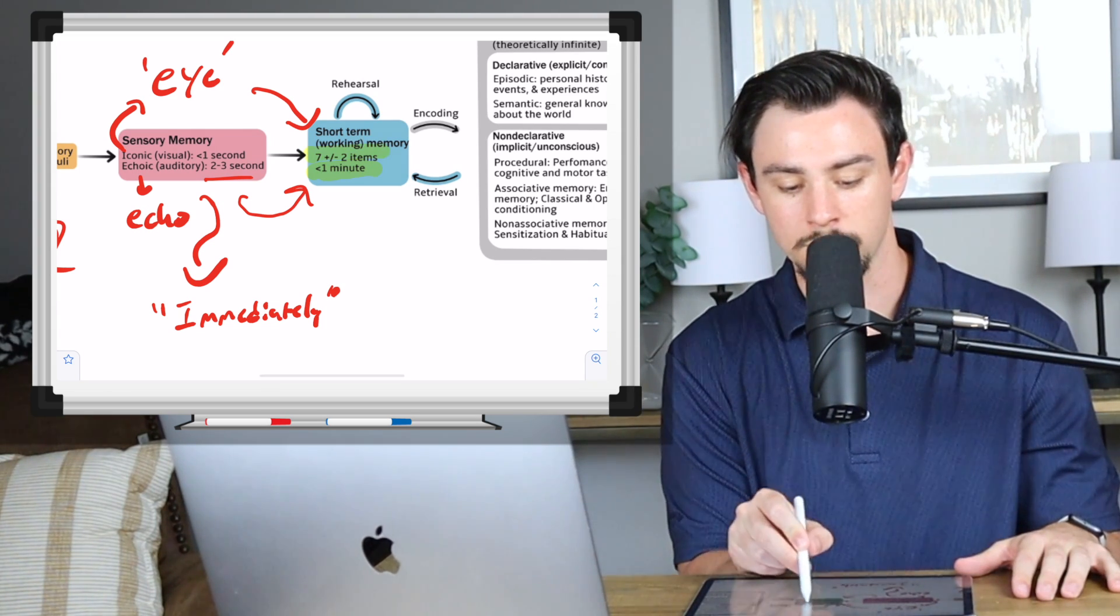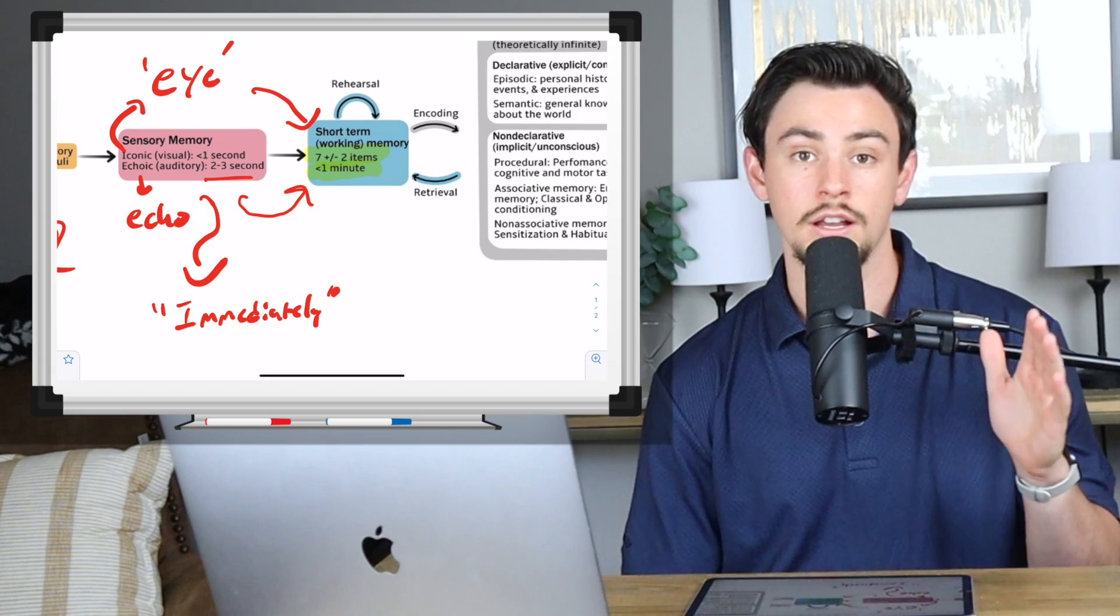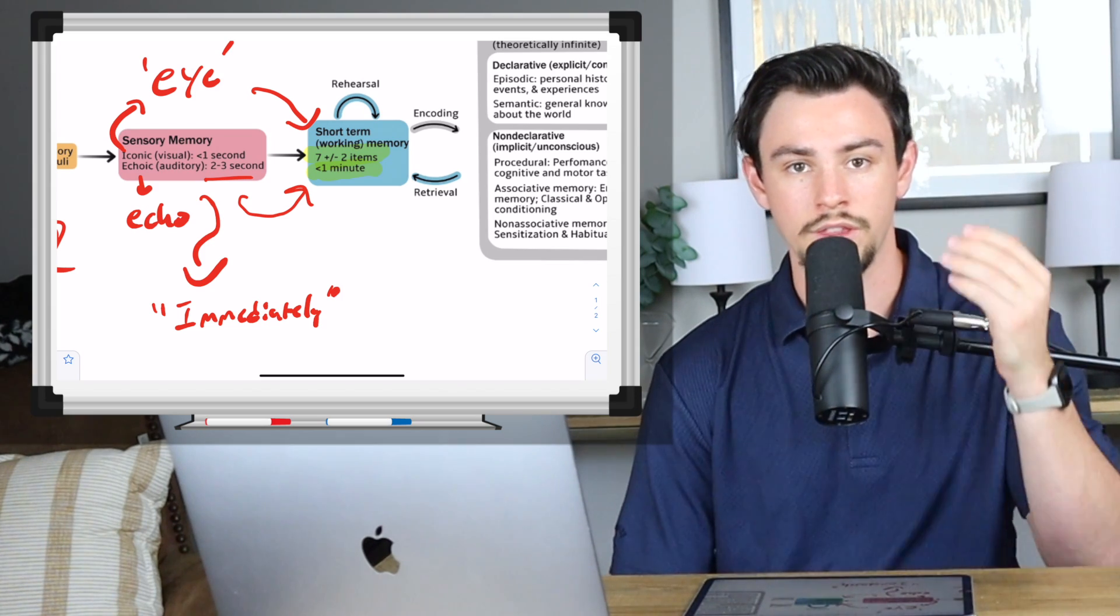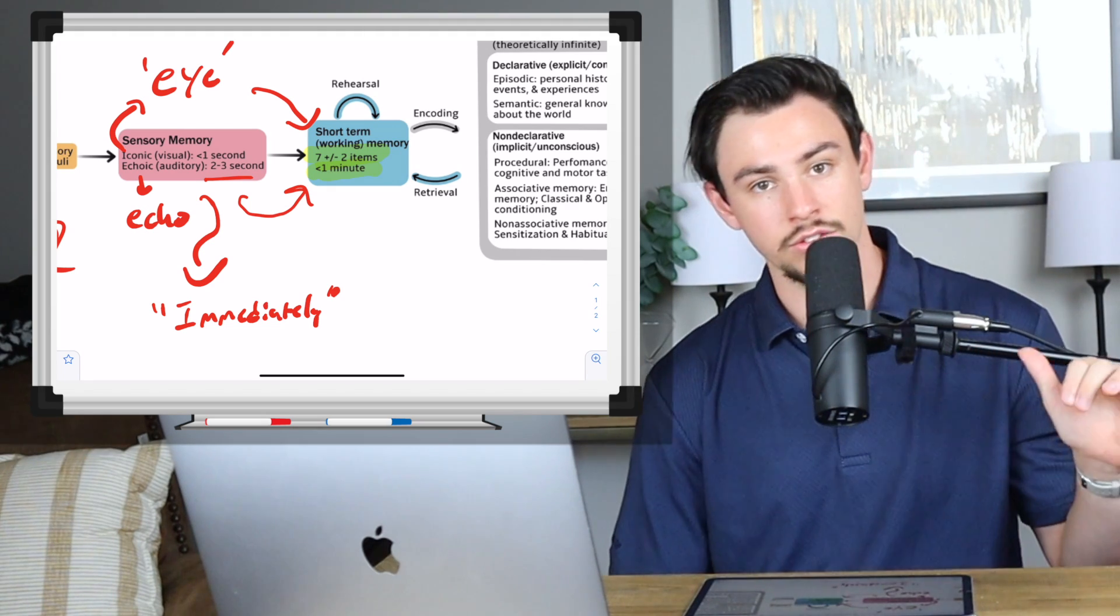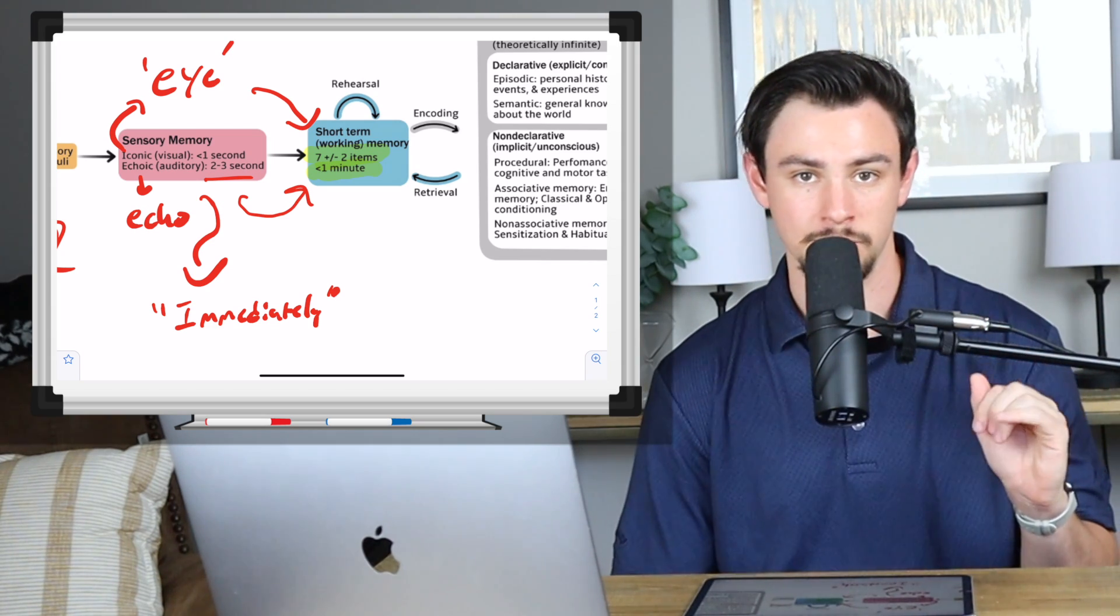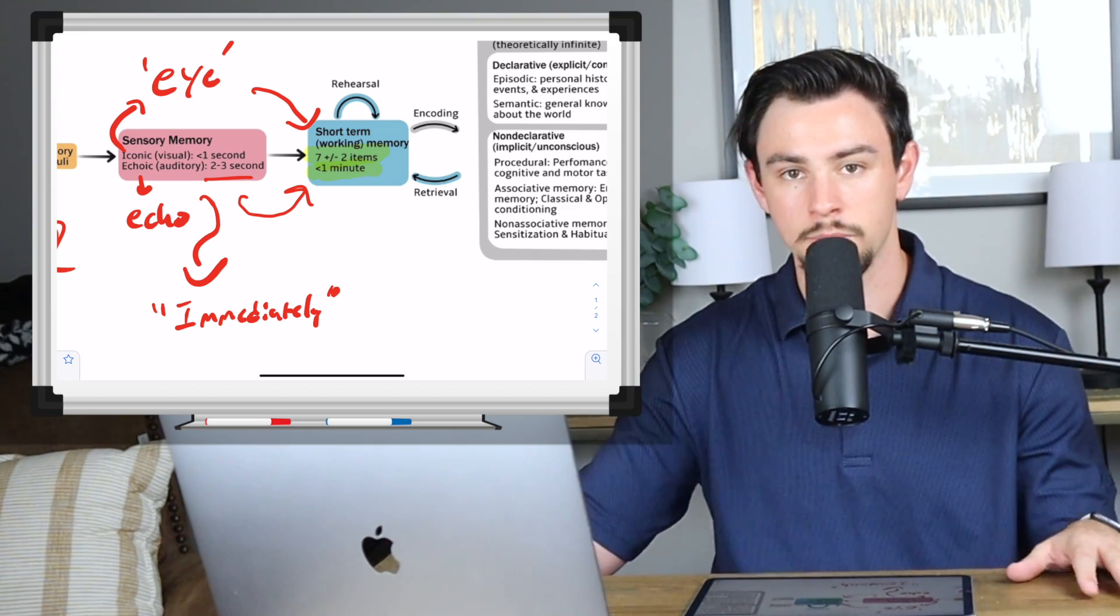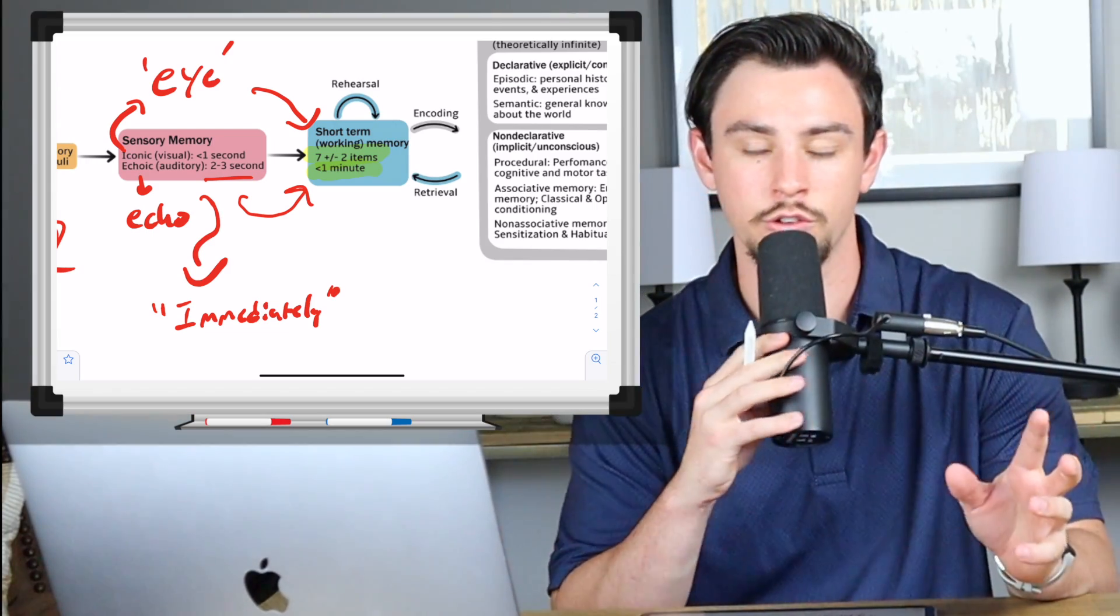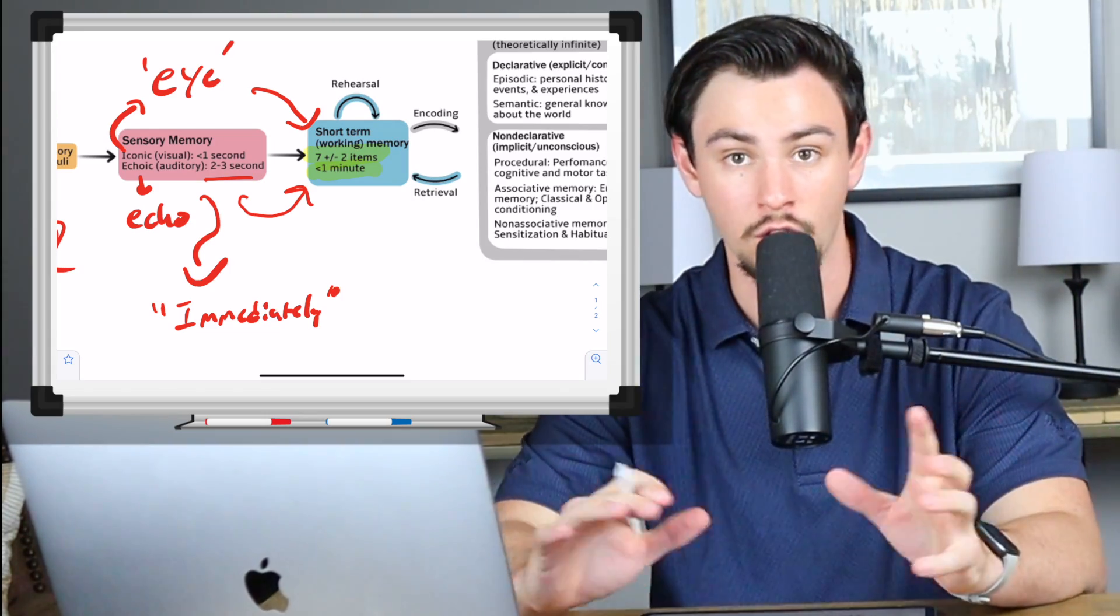The other thing that they test on short term memory is this seven plus or minus two items. And so if you've ever wondered why phone numbers are seven digits, this is the thought process that leads to that. And it's that the average person can remember seven plus or minus two unrelated items. So in a list, you can remember seven plus or minus two unrelated things. Now that's the average person. Some people can't remember, you know, five and then you've got some people that can remember tons. If you see seven plus or minus two, your answer is probably either going to be short term memory or working memory. Just make sure that you're taking the whole question into account.